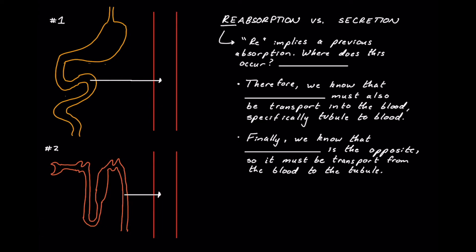Okay, so we're going to say predominantly in the small intestine. Therefore, we know that reabsorption must also be transport into the blood if it is reabsorption. So that's what we've drawn in number two. This is going to be our reabsorption from the nephron into the bloodstream.